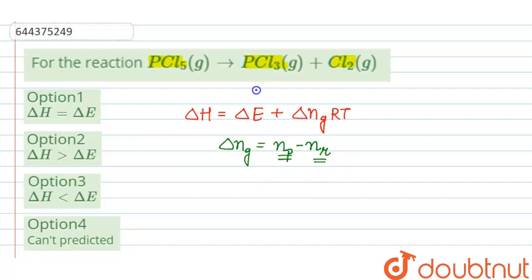If we calculate delta NG for this reaction, it will be equal to the number of gaseous moles in the product side. So, 1 mole of PCl3, 1 mole of Cl2,